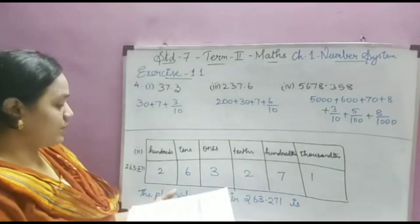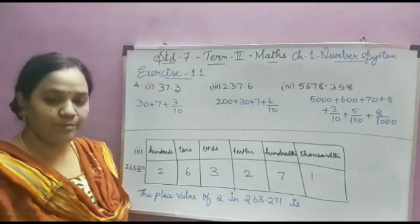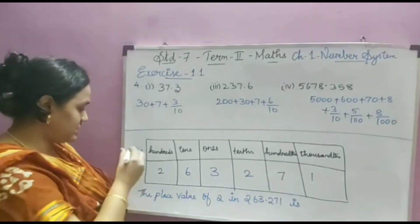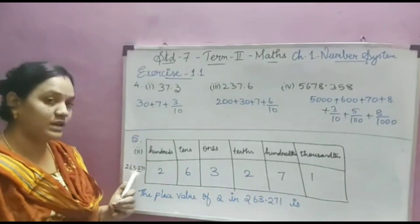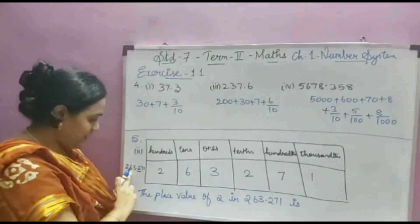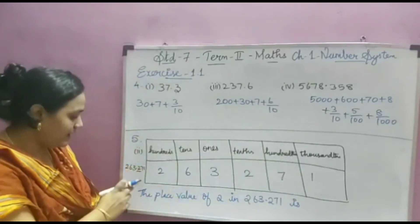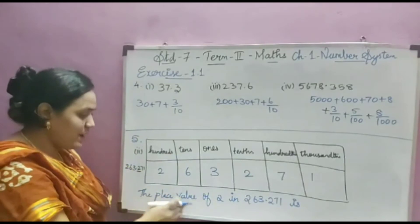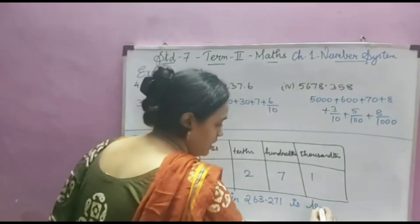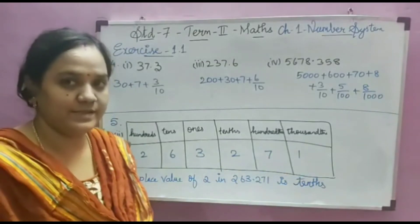Fifth question: express the following decimal numbers in a place value grid and write the place value of the underlined digit. We saw this same model problem in our previous video. The number I have taken is the second option: 263.271. I have drawn the place value grid — in ones place I wrote 3, tens place 6, hundreds place 2. Likewise, tenths place 2, hundredths place 7, thousandths place 1. The underlined digit is 2. The place value of 2 in 263.271 is the tenths place. That is your answer.